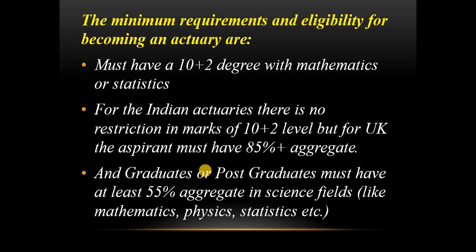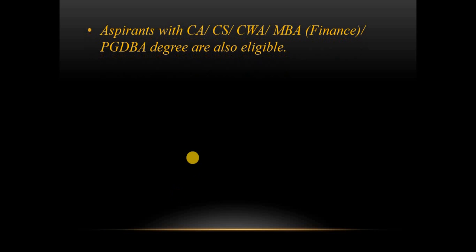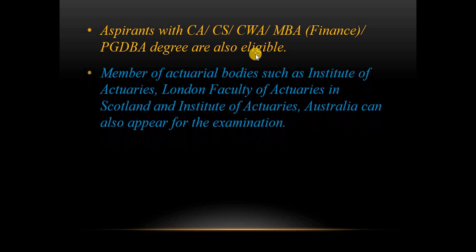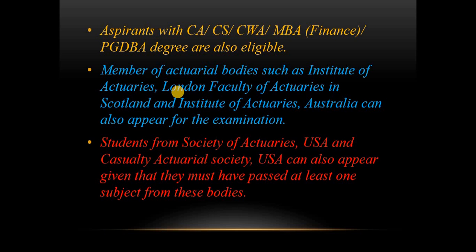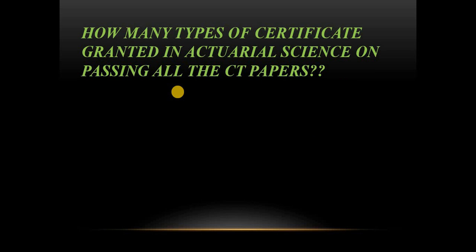For graduate and postgraduate students, you need at least 55% in science fields like maths, physics, or statistics. If you don't have that, you can show your Class 11–12 marks instead. Aspirants with CS, CA, MBA in Finance, or PG diplomas are also eligible. Students who have cracked the ISI entrance exam are exempt from ASET. Members of actuarial bodies like the Institute and Faculty of Actuaries Scotland, the Institute of Actuaries Australia, the Society of Actuaries USA, and the Casualty Actuarial Society USA can also give this examination.